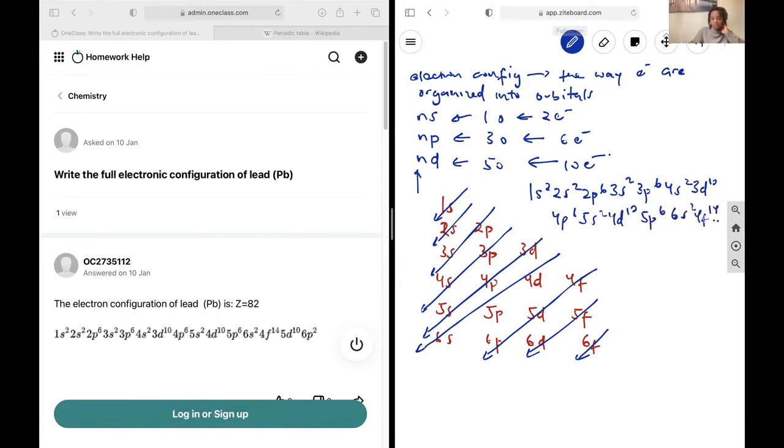6s2, 4f14, so on and so forth. My apologies for not mentioning the f orbitals that are seven orbitals and can hold 14 electrons therefore. And so I can decide to figure out how many electrons I have for lead.